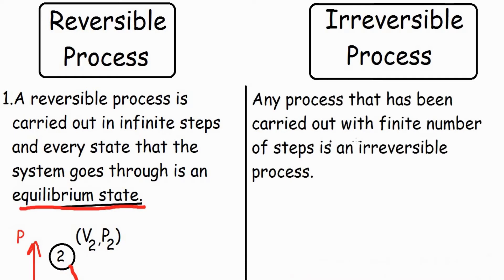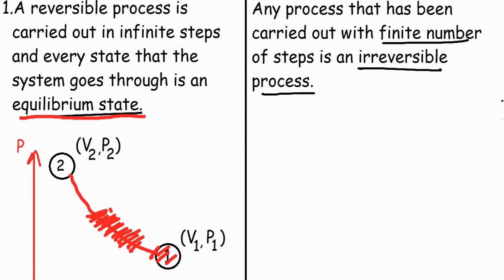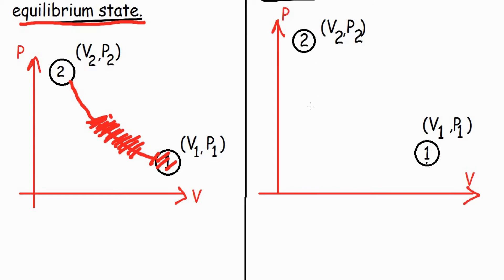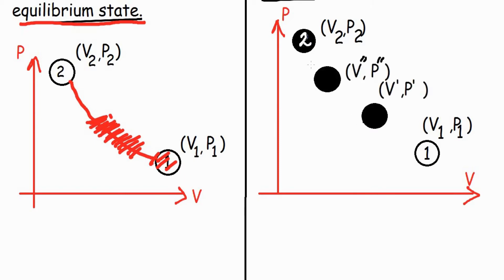Any process carried out with a finite number of steps is an irreversible process. To represent this on a PV diagram: for an irreversible process going from state 1 to state 2, I move through a finite number of steps — either directly from 1 to 2, or through some intermediate 3rd or 4th steps. These intermediate steps are represented by V'P' and V''P'', in order to reach V2P2, the final state.